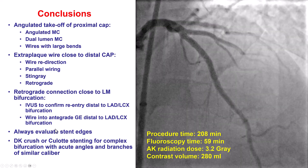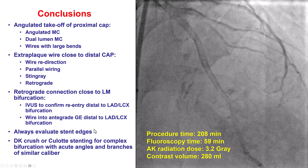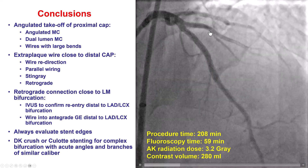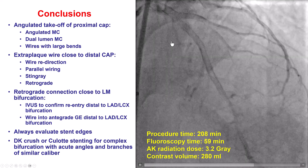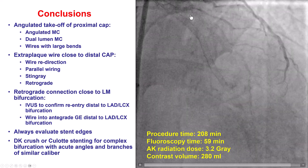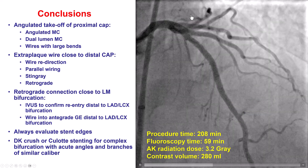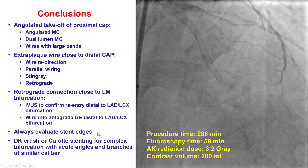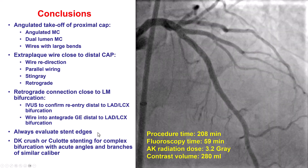There was a stent edge dissection that was stented. And when there is a complex bifurcation, sometimes it is best to use a two-stent strategy. Here we used a DK crush and had a very nice result.